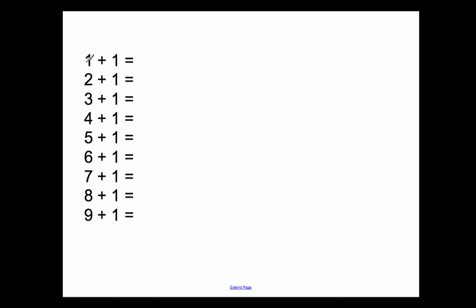So 1 plus 1, the next number after 1 is 2, so it would be 2. That's why 1 plus 1 equals 2. 2 plus 1, the next counting number would be 3. 3 plus 1 equals 4. 4 plus 1 equals 5. 5 plus 1 equals 6. 6 plus 1 equals 7, as we just saw before. 7 plus 1 equals 8. 8 plus 1 equals 9. And 9 plus 1 equals 10, because the next counting number that comes after 9 is 10.